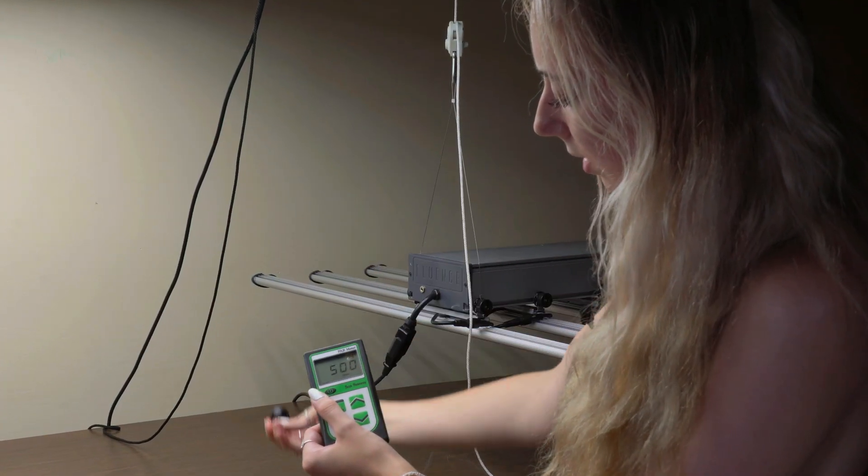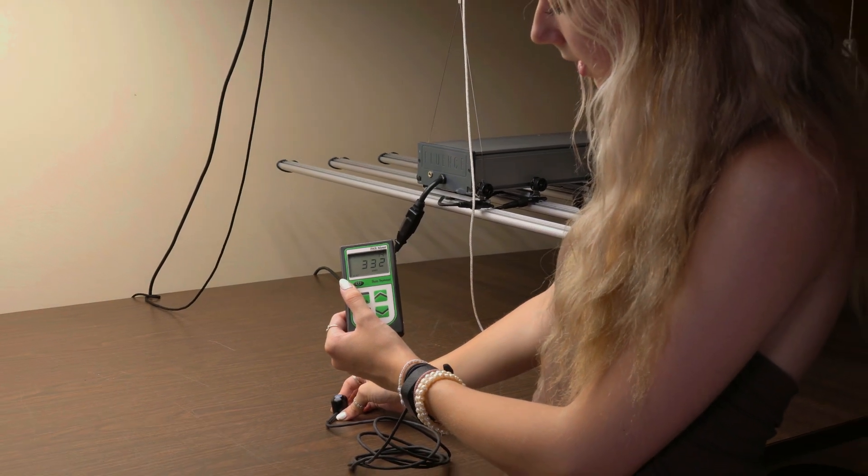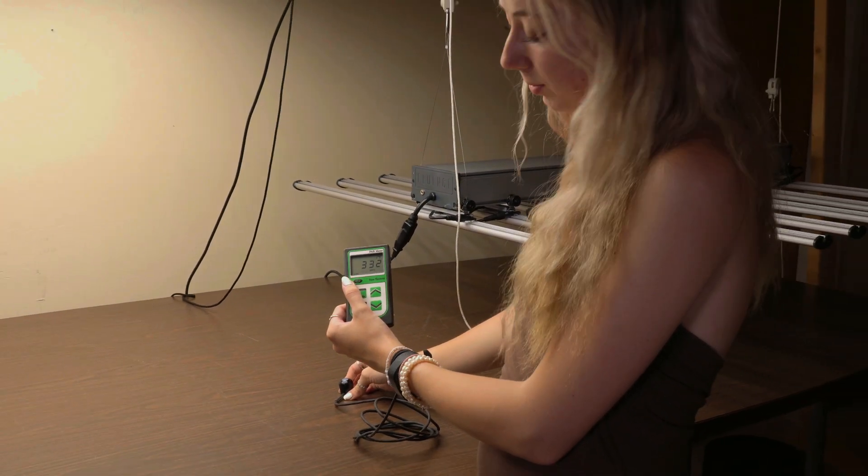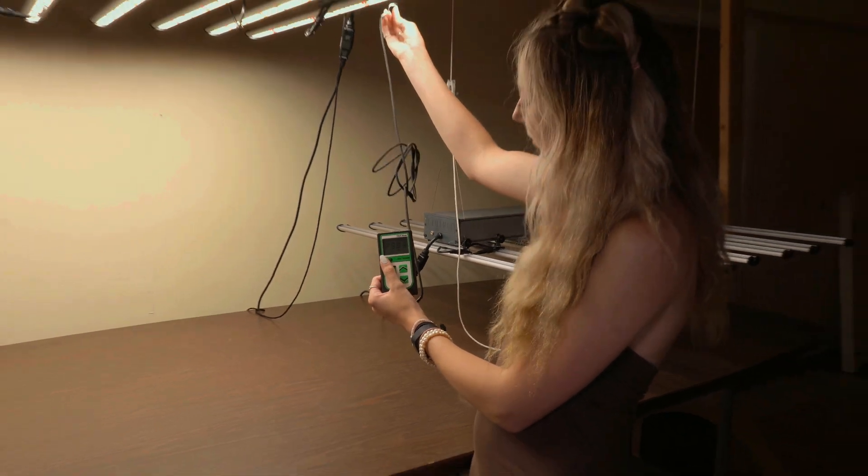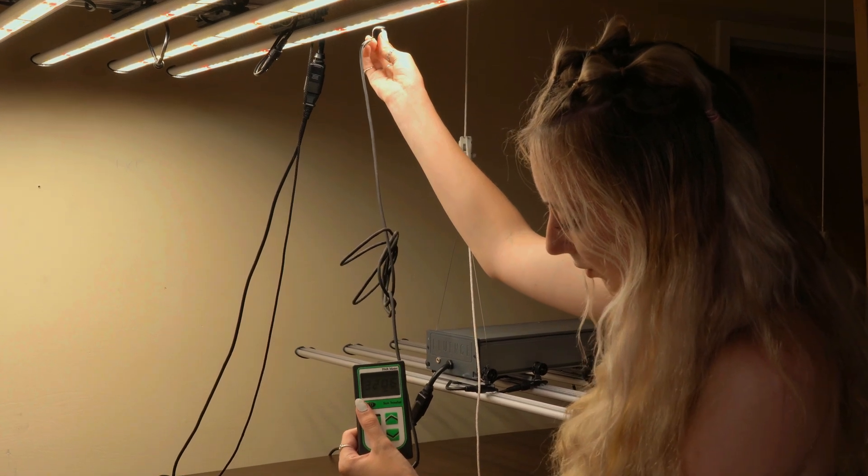So you could see down here, we read at about 330 light intensity, which is a little high for little baby plants. Up here, we have over 2,000, a reading of over 2,000.